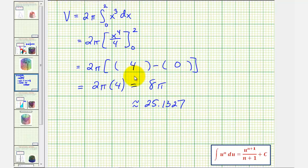So we have both the exact and the approximate volume of our solid, and because this is volume, these would be cubic units.